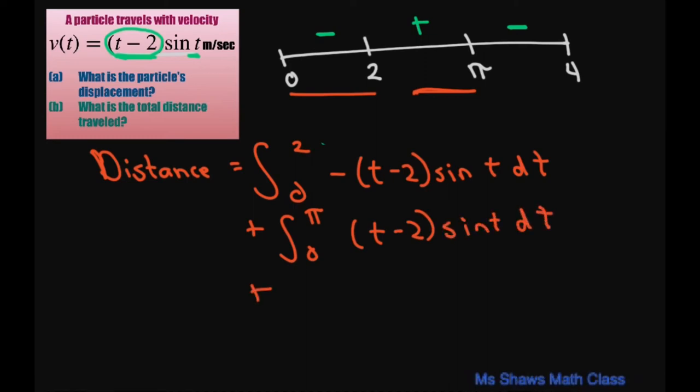And then plus this part. This is going to be from pi to 4, and that's going to be negative t minus 2 sine of t dt. Now we already know how to integrate this. So let's do that.